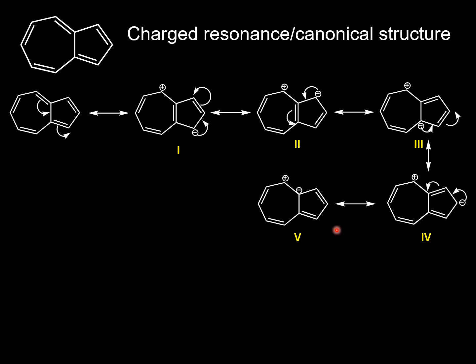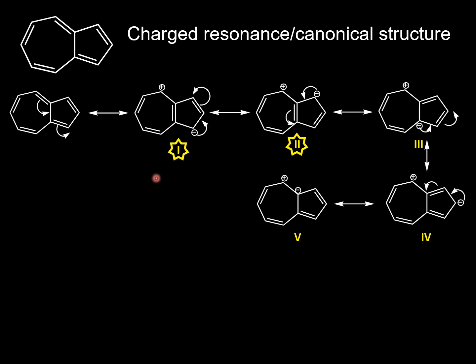Please look at these structures very carefully. Similarly, structures 1 and 2 will have aromatic nature — both rings will have aromatic character. Therefore, the contribution of resonance forms 1 and 2 will be found to be more significant in the stabilization of azulene.